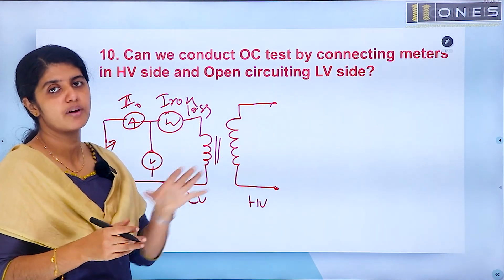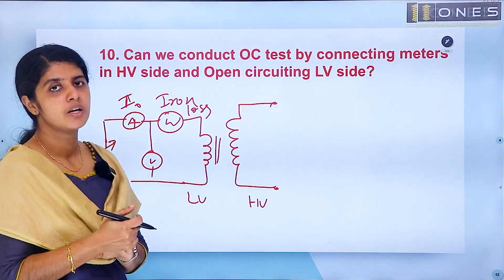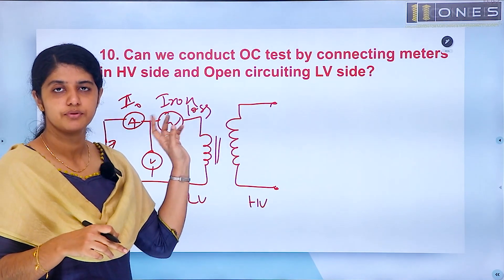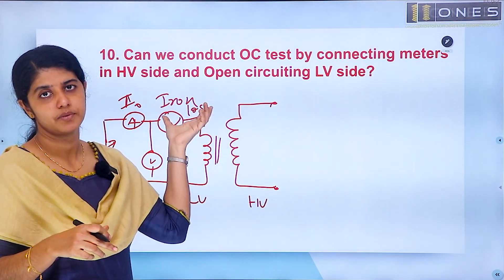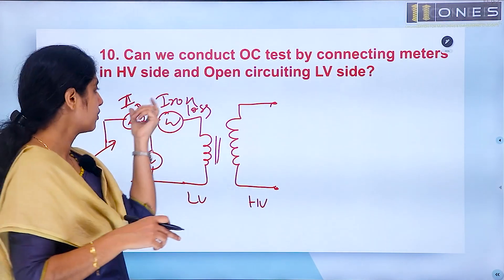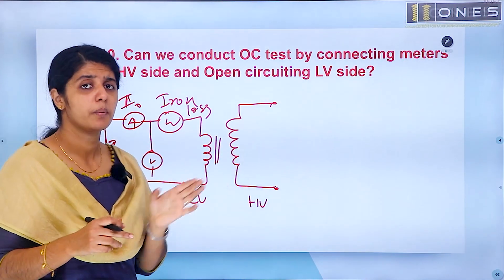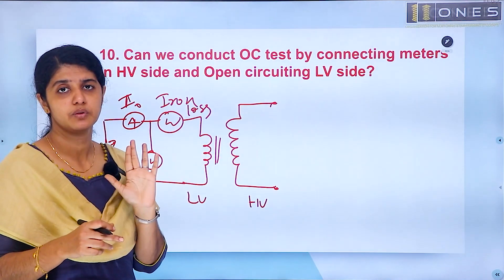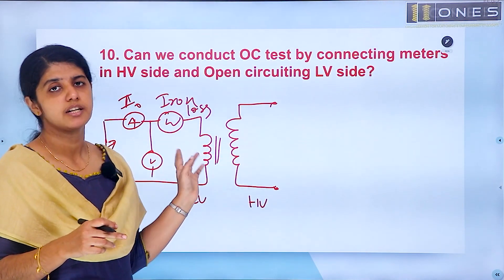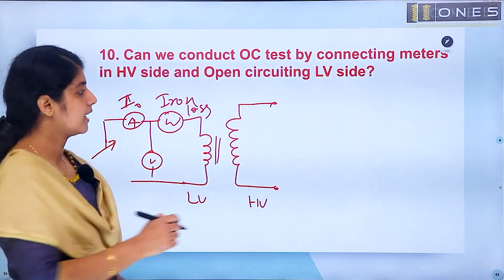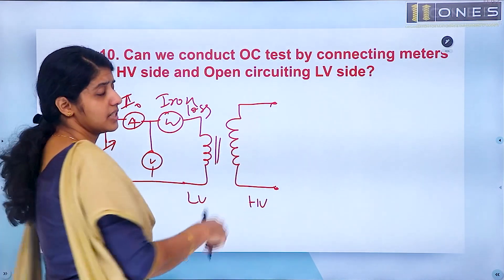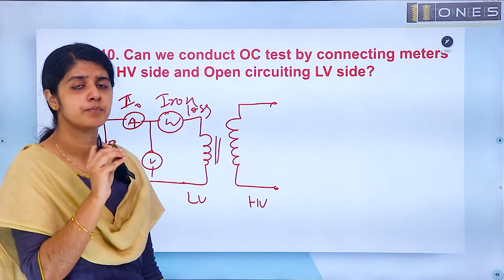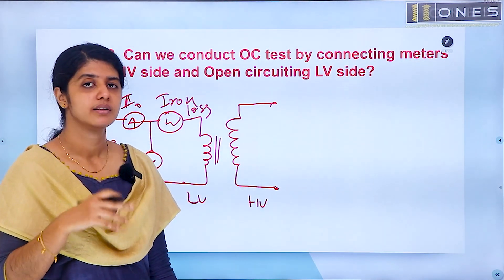If we apply rated voltage, it produces full flux. If it is full flux, we get full core loss. If you connect the primary, you will have a small current value — that is negligible. So the total wattmeter reading gives us the core loss.